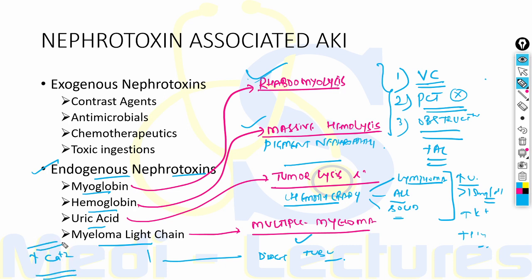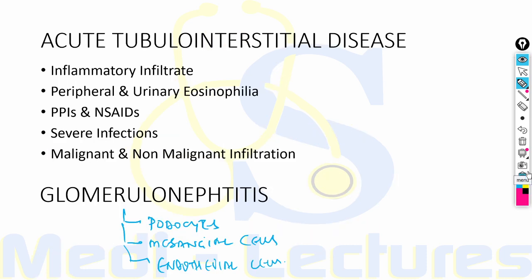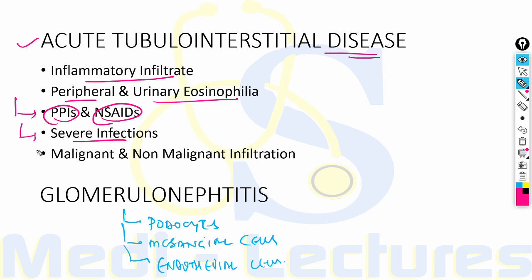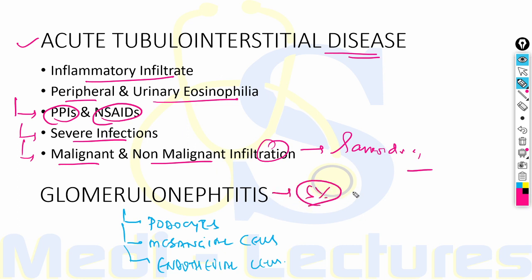Rarely, acute tubular interstitial disease is characterized by inflammatory infiltrate, peripheral and urinary eosinophilia, and is caused by drugs like proton pump inhibitors and NSAIDs, severe infections like Legionella, and malignant or non-malignant infiltration like sarcoidosis. Glomerulonephritis is implicated in only five percent of AKI cases, where damage to podocytes, mesangial cells, or endothelial cells compromises the filtration barrier and blood flow.